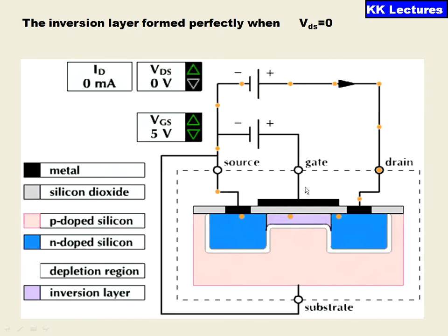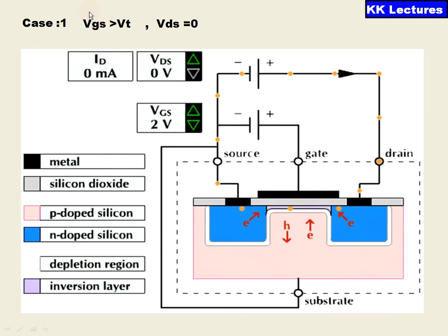When VGS is greater than VT and VDS equals zero, the only possibility is the formation of the channel with electrons attracting towards the channel and holes moving away as we are applying the positive voltage.